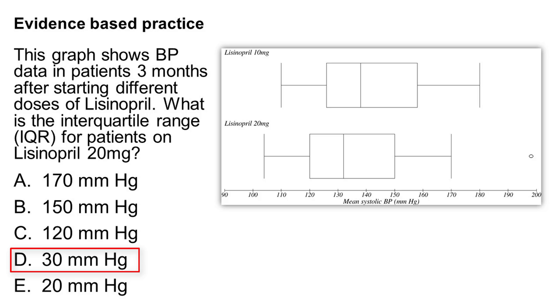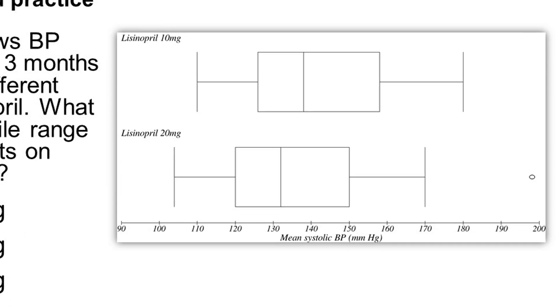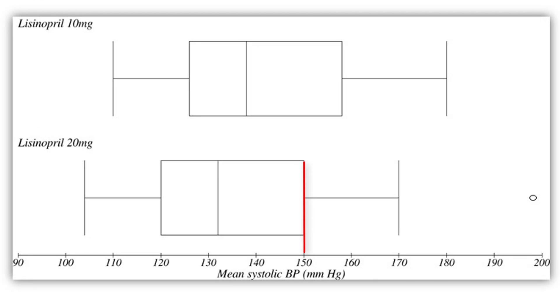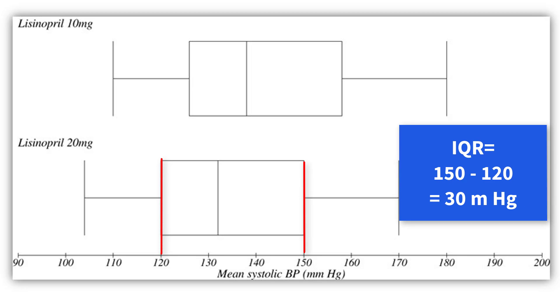The interquartile range is the range from the upper quartile, which is marked here, and you take away from that the lower quartile reading, which is here. In this case, that gives this answer. Let's go through the components of a box and whisker plot.